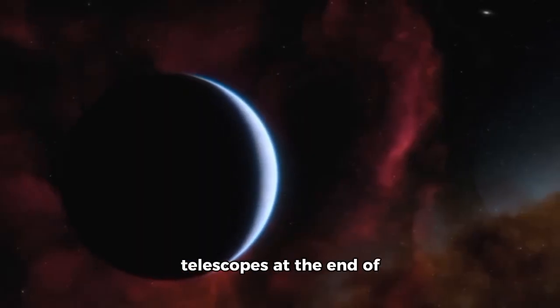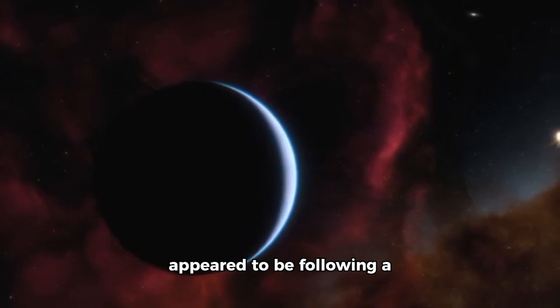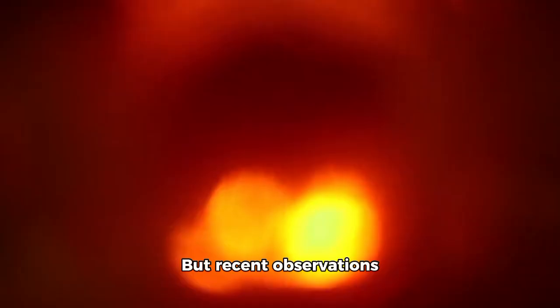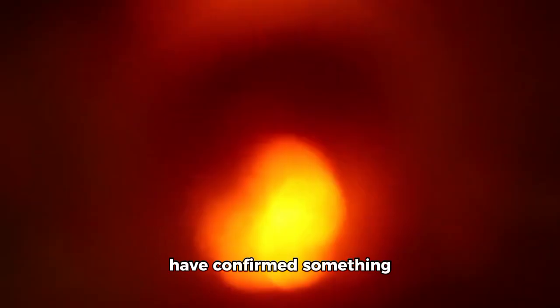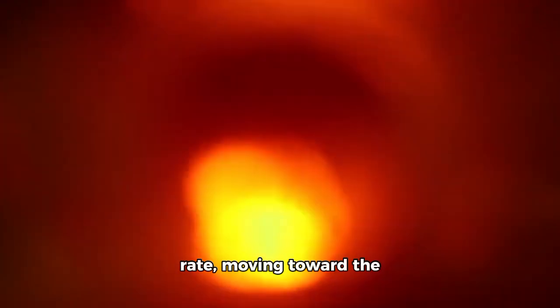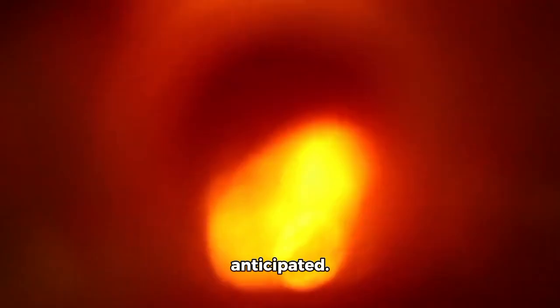Detected by powerful telescopes at the end of last year, it initially appeared to be following a normal hyperbolic route through the farthest points of our solar system. But recent observations have confirmed something unexpected: it's picking up speed at an unusual rate, moving toward the inner solar system faster than models had anticipated.